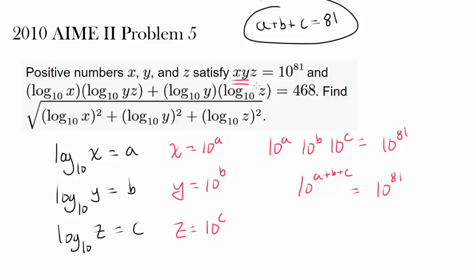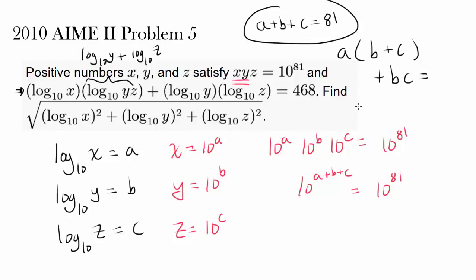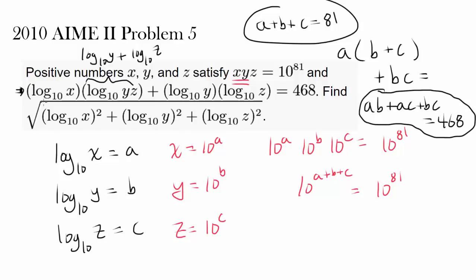This seems more simplified than the original. Now for the second constraint: log base 10 of x, which is a, times log base 10 of yz — and log base 10 of yz is log base 10 of y plus log base 10 of z, which is b plus c — gives us a times (b plus c), which is ab plus ac. Adding log base 10 of y times log base 10 of z, which is bc, we get ab plus ac plus bc equals 468.